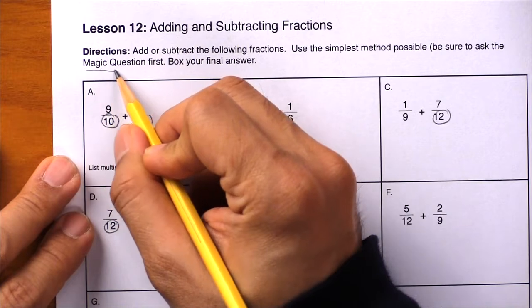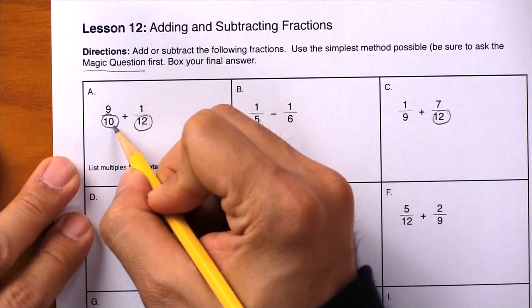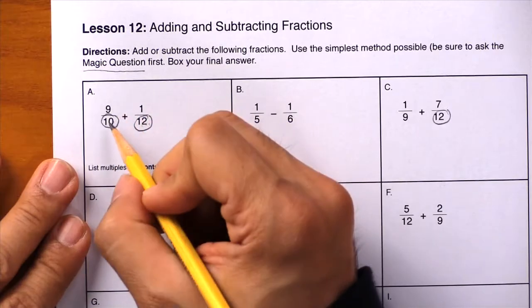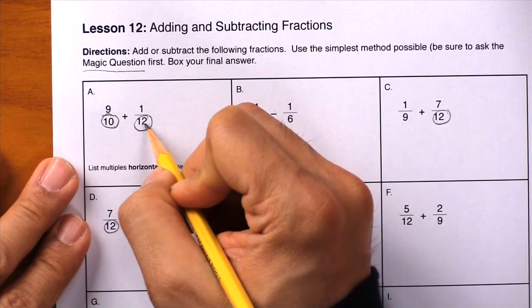Let's use the magic question first to see if it works. Can you do 12 divided by 10 evenly? The answer is no, so we have to use the shortcut. Here's the shortcut: don't count by 10 and count by 12, just count by 12 which is the larger number.